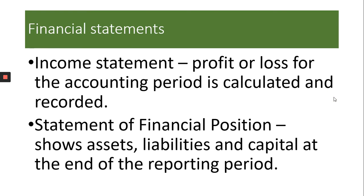After the trial balance is balanced, we then record in the financial statements. That is the final stage in the accounting cycle. The financial statements include the income statement, where the profit or loss for the accounting period is calculated and recorded, and the statement of financial position, which shows the assets, liabilities, and capital at the end of the reporting period.